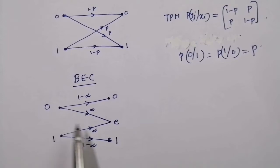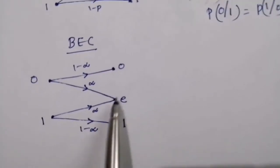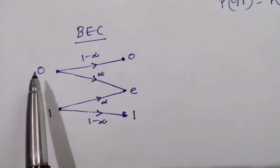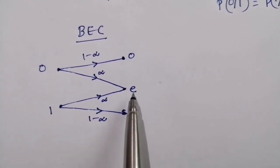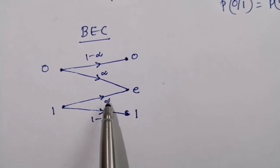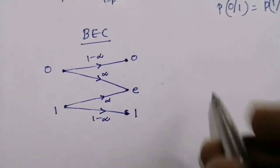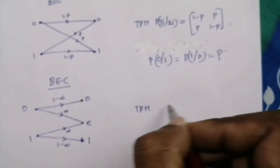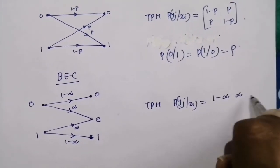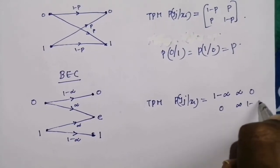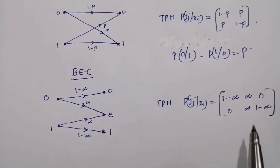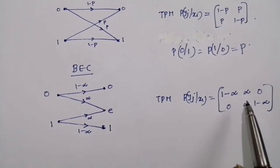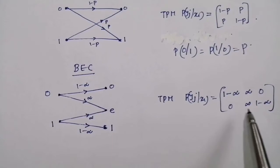For the binary erasure channel, the probability of getting an erasure is alpha. So the probability of receiving 0 after transmitting 0 is (1-alpha), the probability of receiving e after transmitting 0 is alpha, the probability of receiving e after transmitting 1 is alpha, and the probability of receiving 1 after transmitting 1 is (1-alpha). The transition probability matrix is: p(yj|xi) = [(1-alpha, alpha, 0), (0, alpha, 1-alpha)]. The elements of each row are a permuted combination.